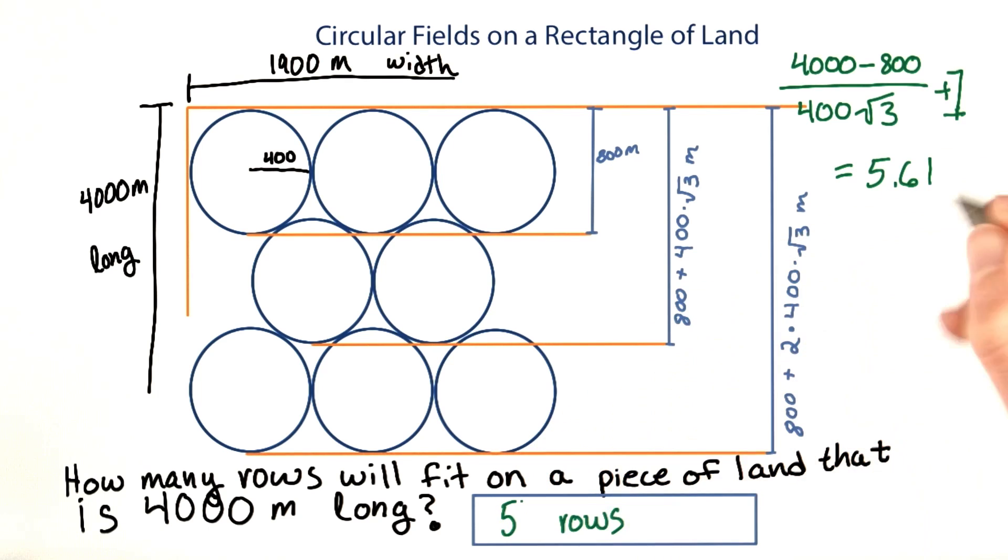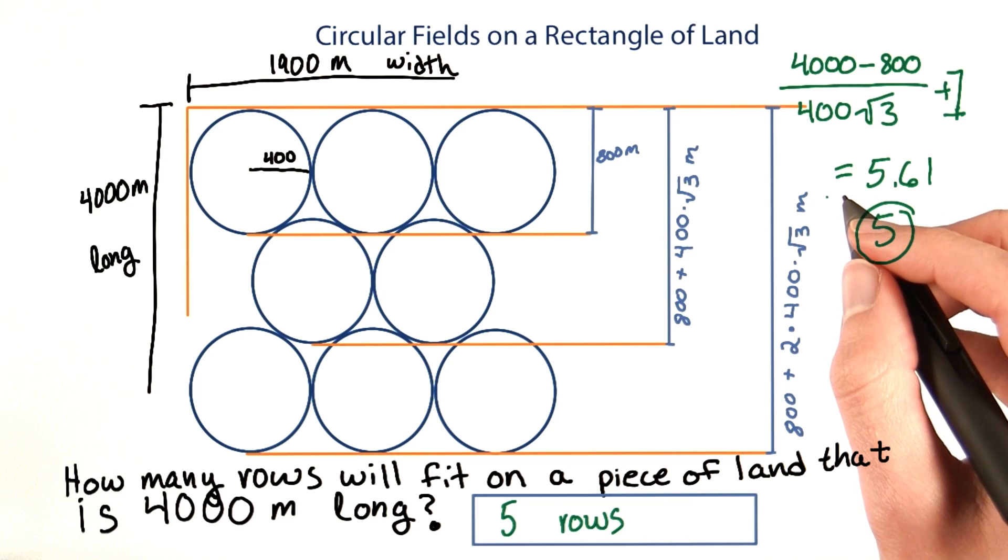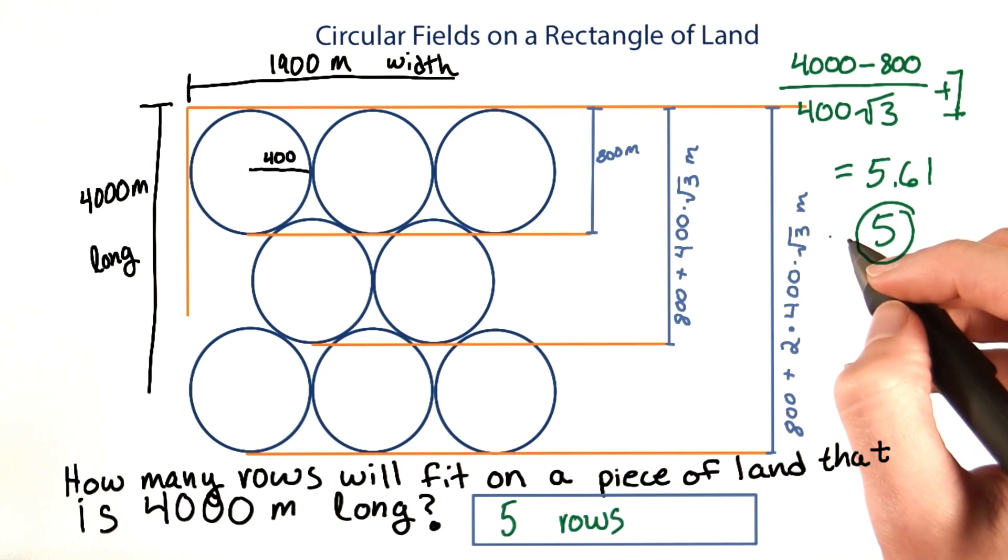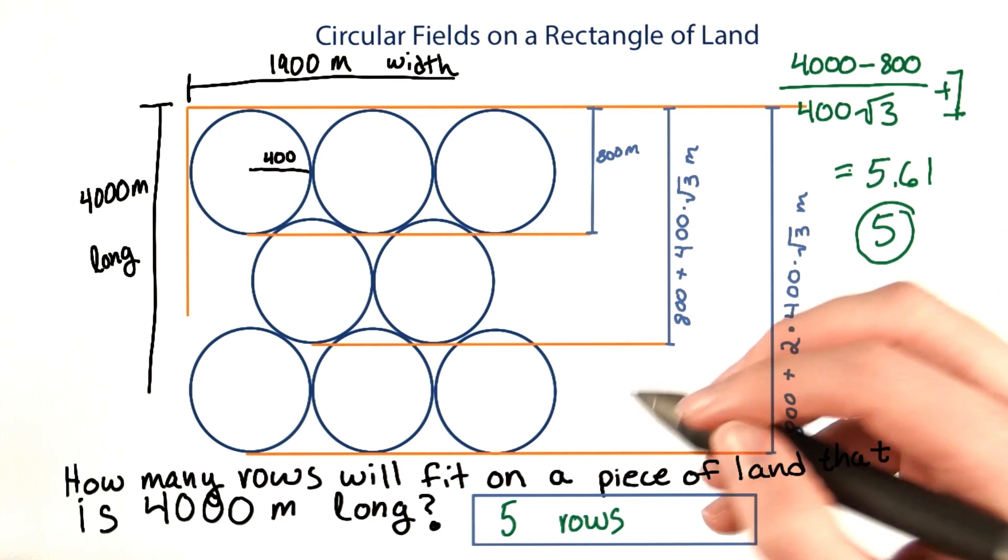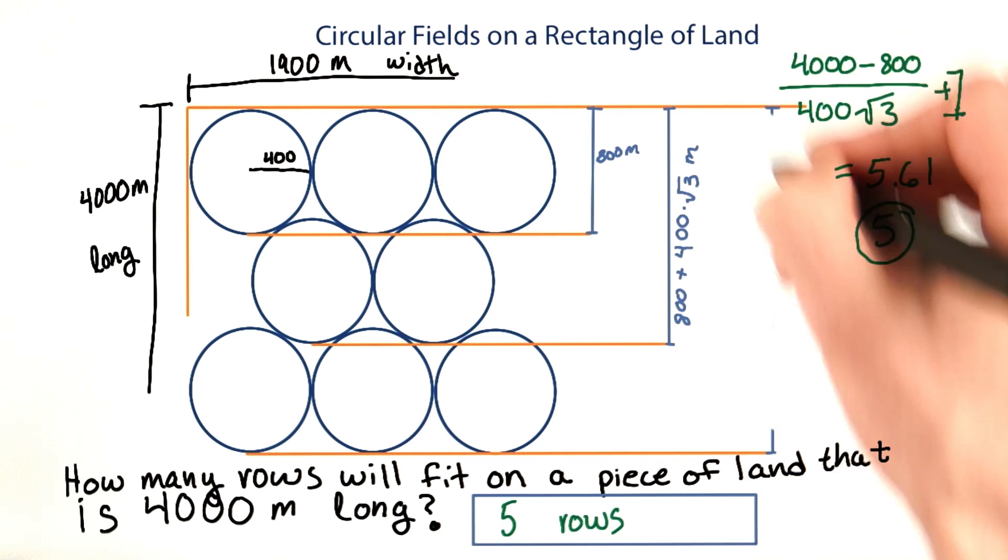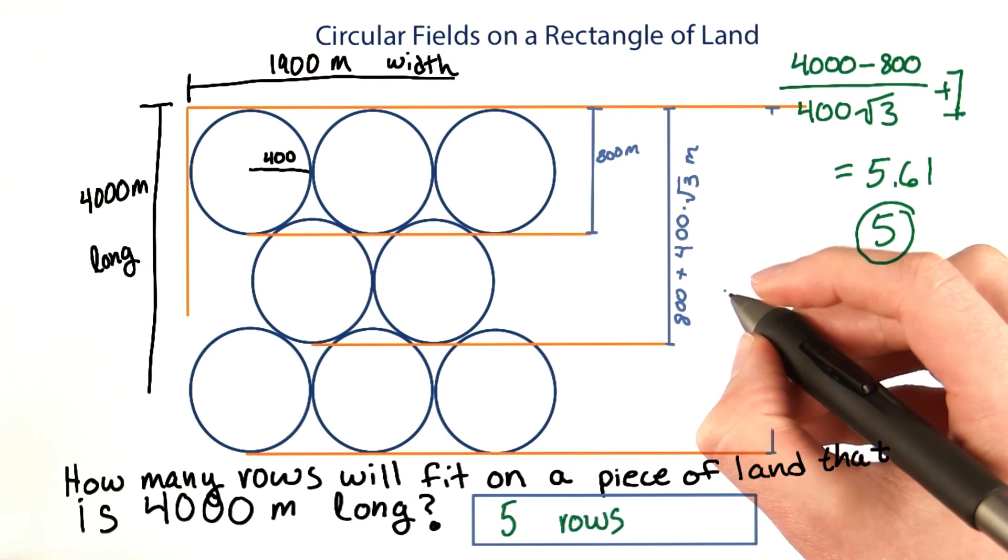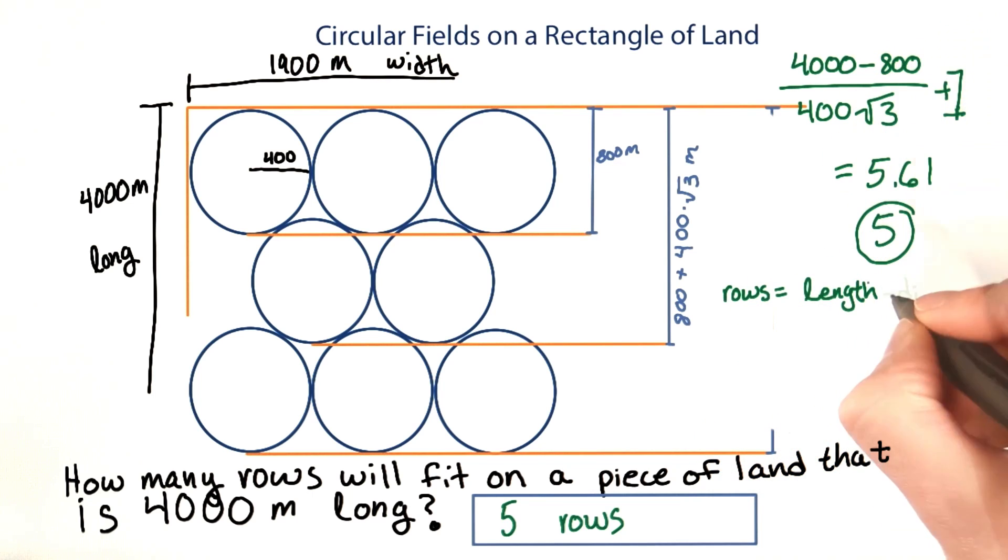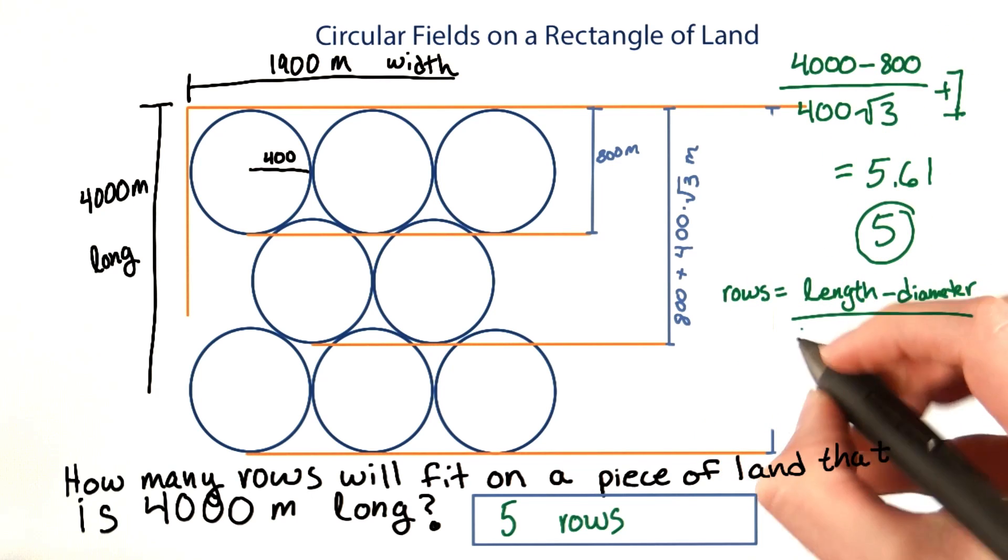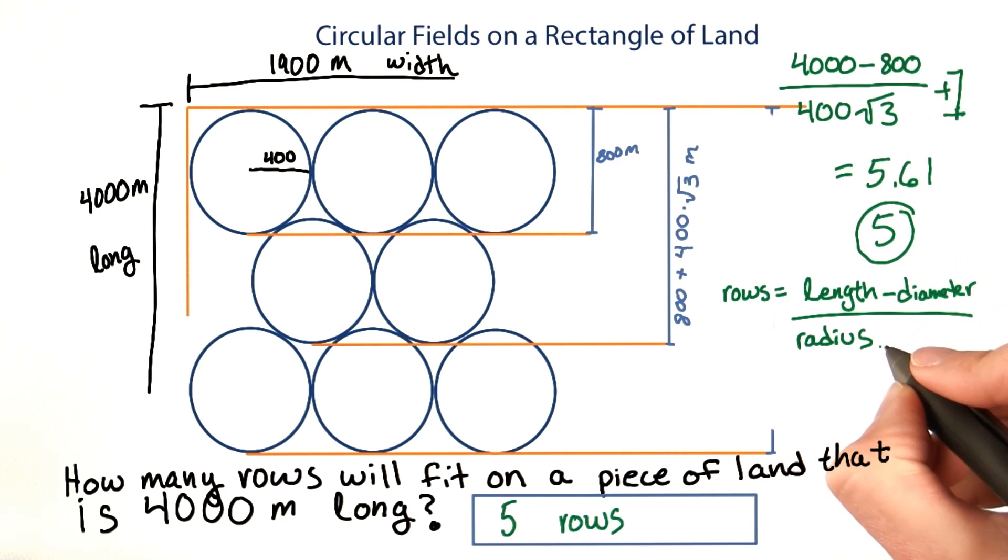But we said that we couldn't have fractional rows, so we just get 5. Let's generalize what we just did. If you already know the equation for the number of rows given the length of the field, write it down and skip to the next question. Based on what we did up here, the equation should be rows equals the length minus the diameter over the radius times the square root of 3 plus 1.